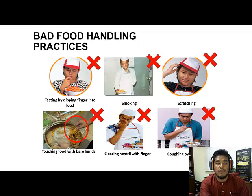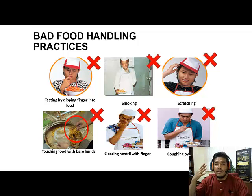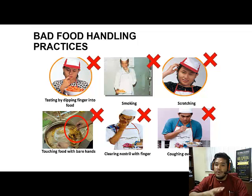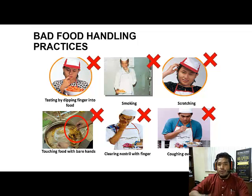For those food handlers who smoke, please smoke somewhere away from the kitchen operation and make sure you wash your hands after smoking. It is also very natural to scratch your head or body, which is why you need to wash your hands regularly before touching food. Do not touch food with bare hands — that is a big no. Clearing your nostril near food is disgusting and should be avoided, and coughing over food is another bad habit commonly seen among food handlers.